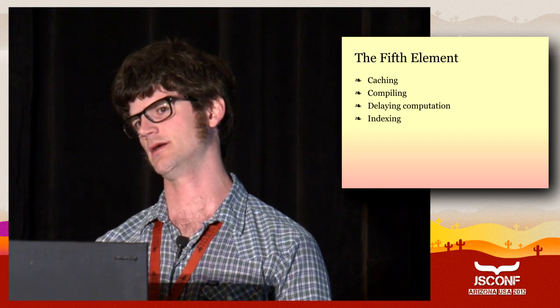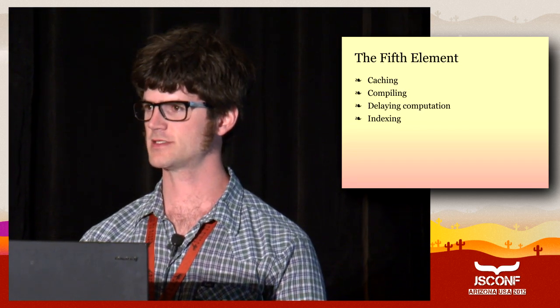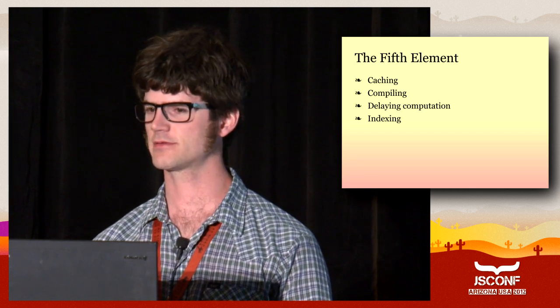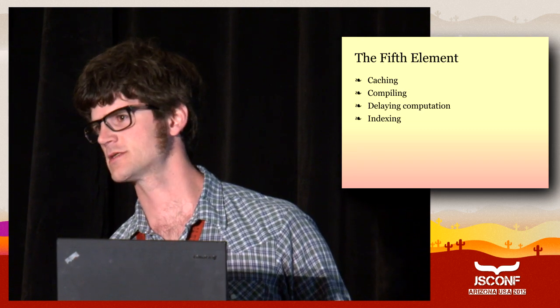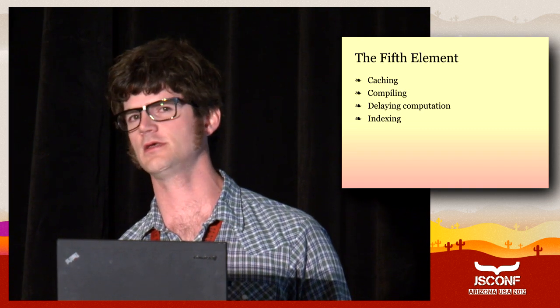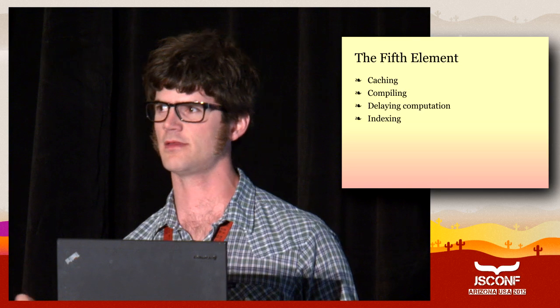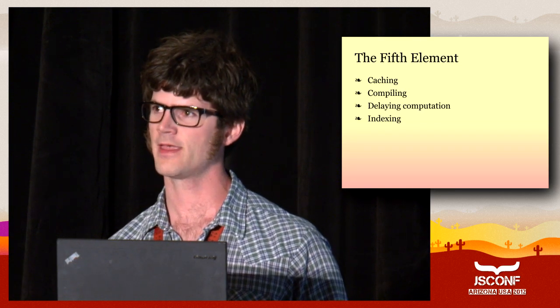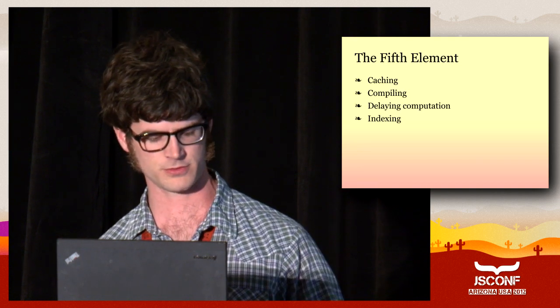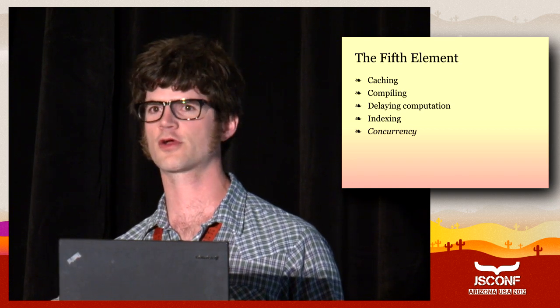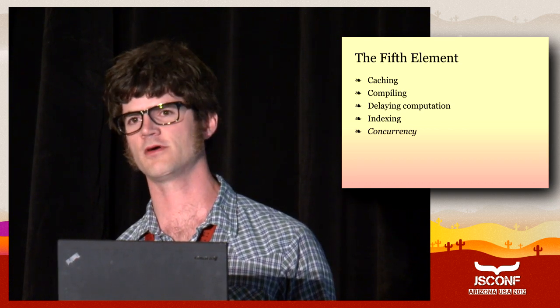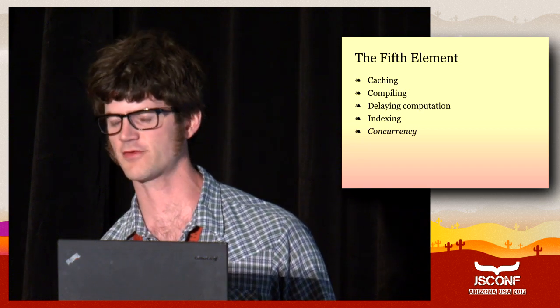Back to Norvig's four ways to speed up an algorithm: caching, compiling, delaying computation, and indexing. I feel like we're missing something, because Norvig was writing about this in 1992 on big Lisp machines. Some things are available to us now that weren't available then — specifically concurrency. How can we bring concurrency to bear on the problem of making JavaScript implementations faster?